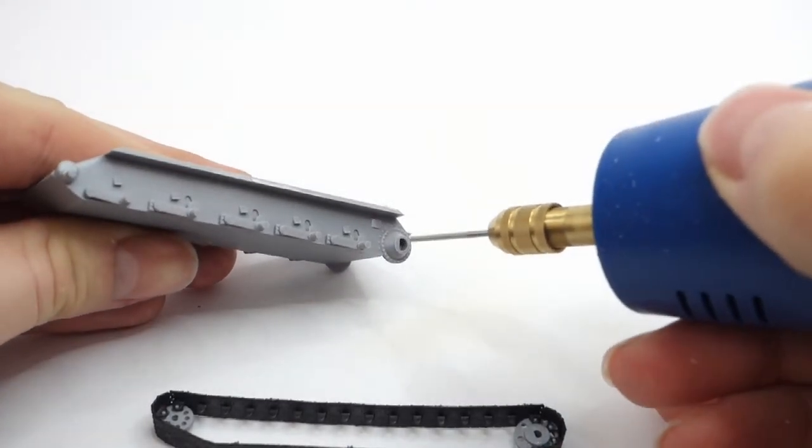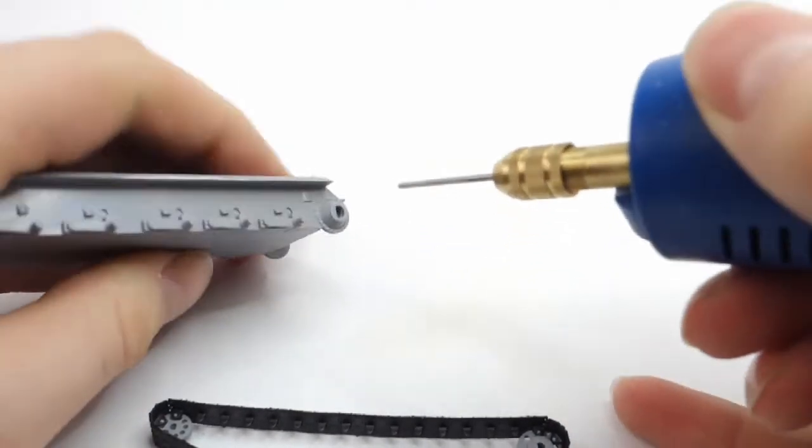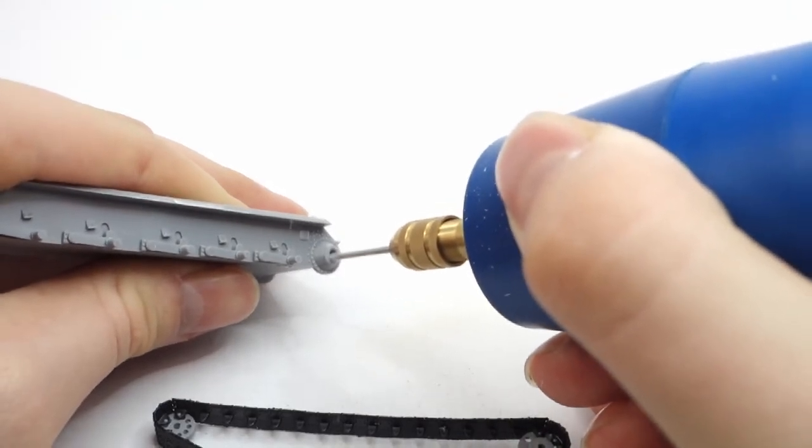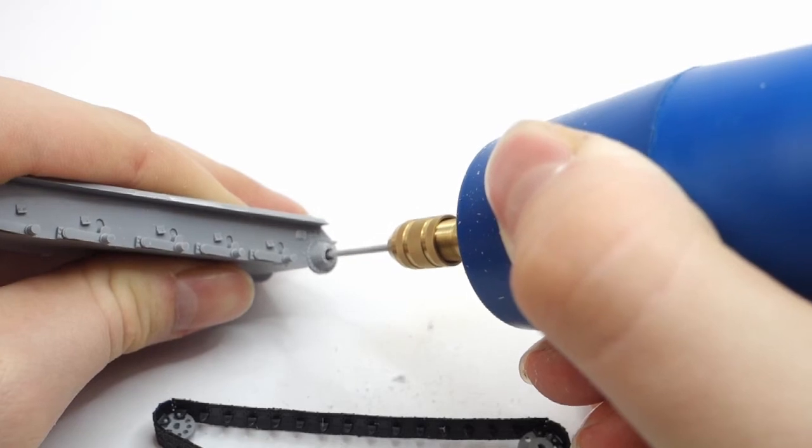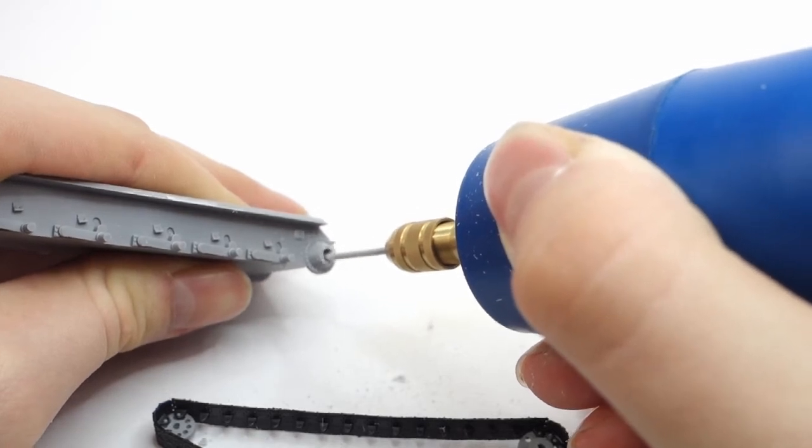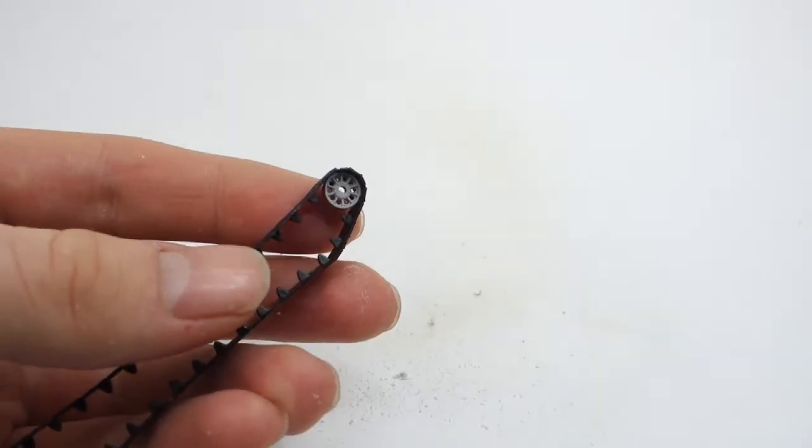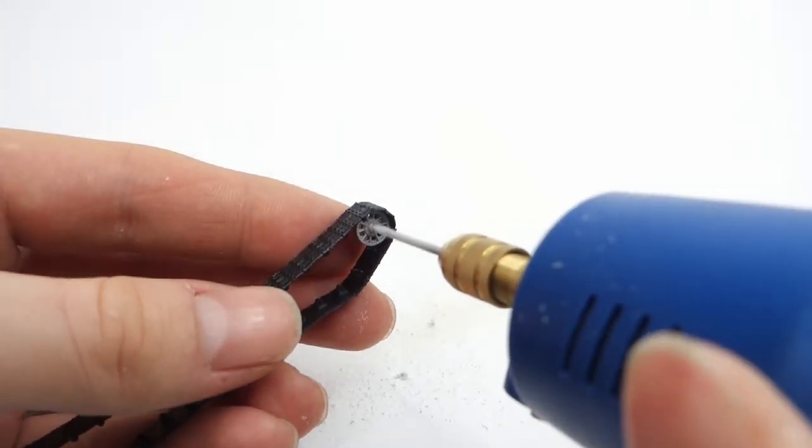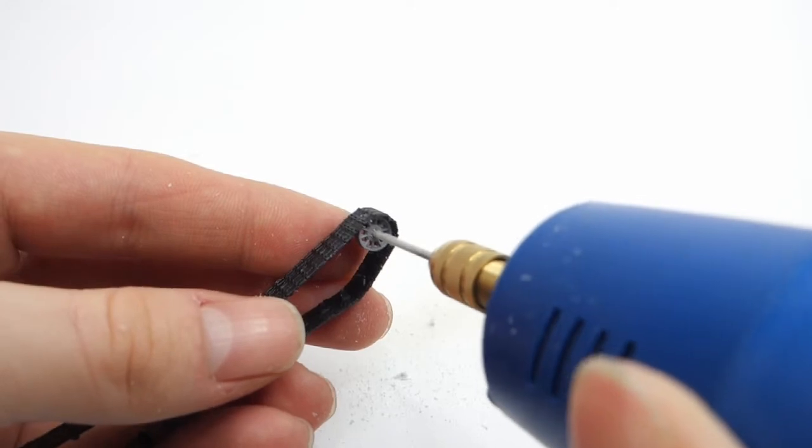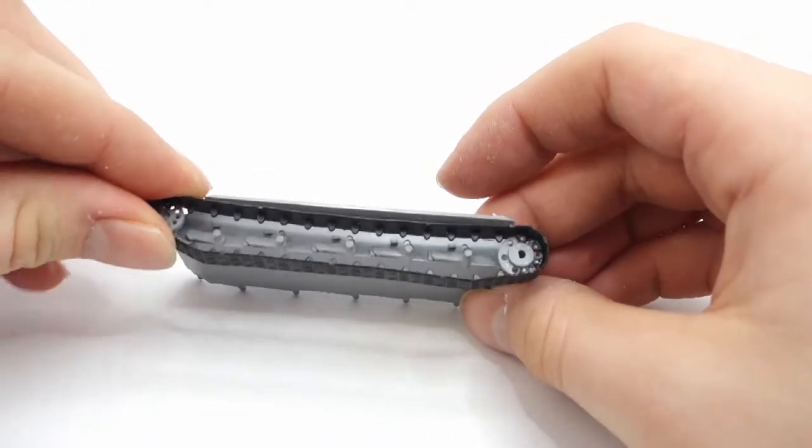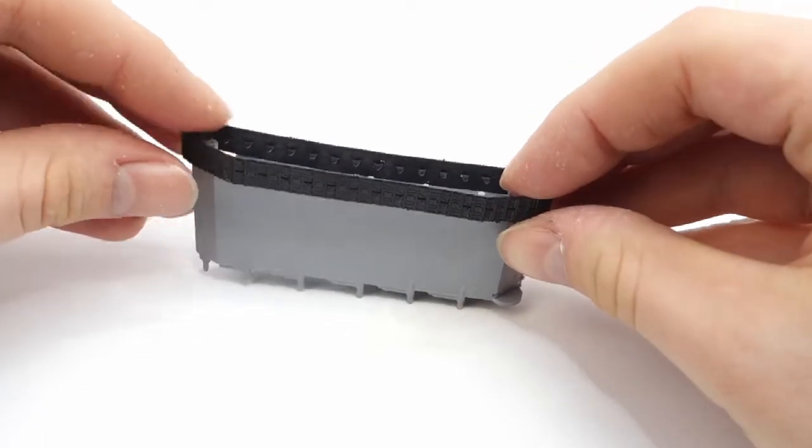To make the track sections easily removable from the hull, I drill out their mounting points. This way it will be easier to disassemble the running gear from the hull for easier painting.